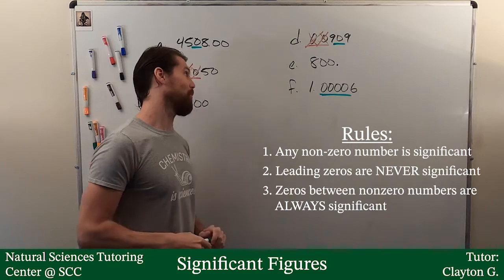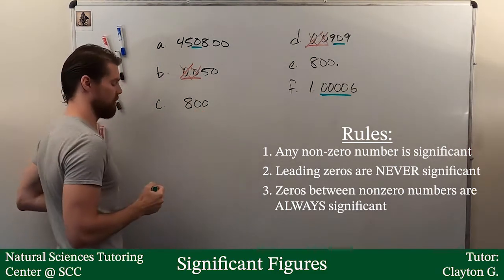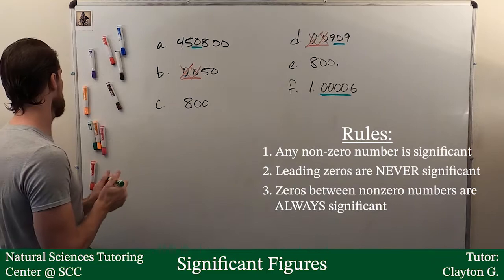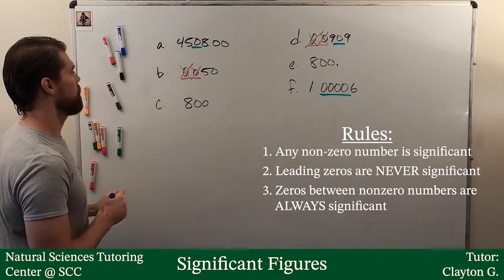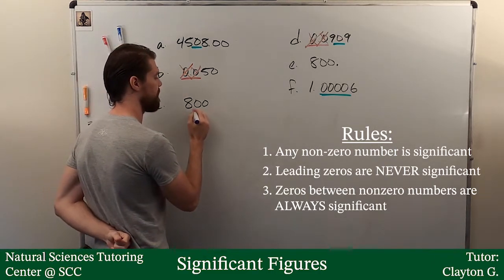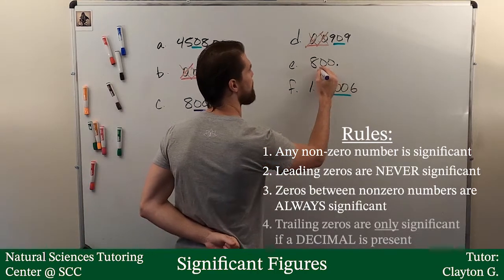Now you may be wondering, what is the third option? Here we have trailing zeros. Let me use a different color. Trailing zeros.